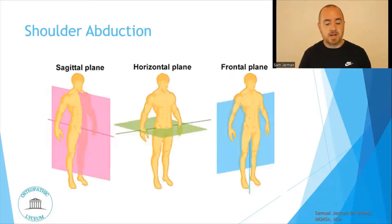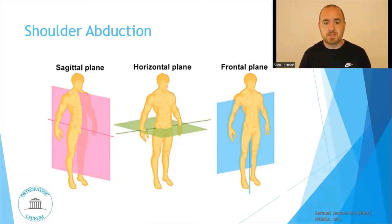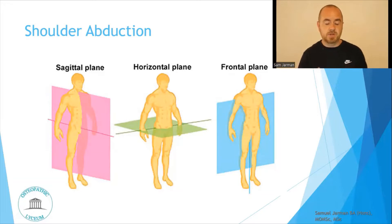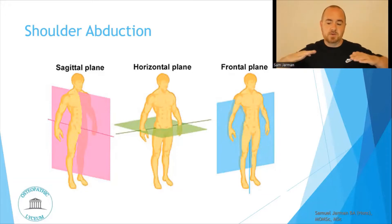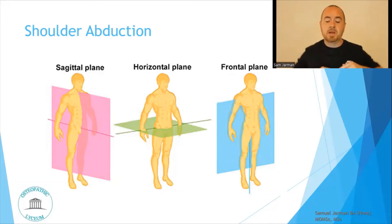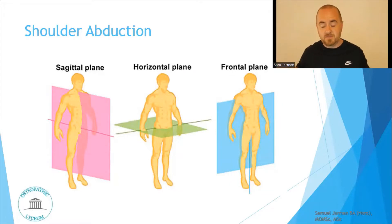As far as planes are concerned — note there is a typo on screen, we're looking at shoulder external rotation, not shoulder abduction. The sagittal plane is a 50% cut of the body left to right. The horizontal or transverse plane is a 50% cut of the body top to bottom. And the frontal or coronal plane is a 50% cut of the body back to front.